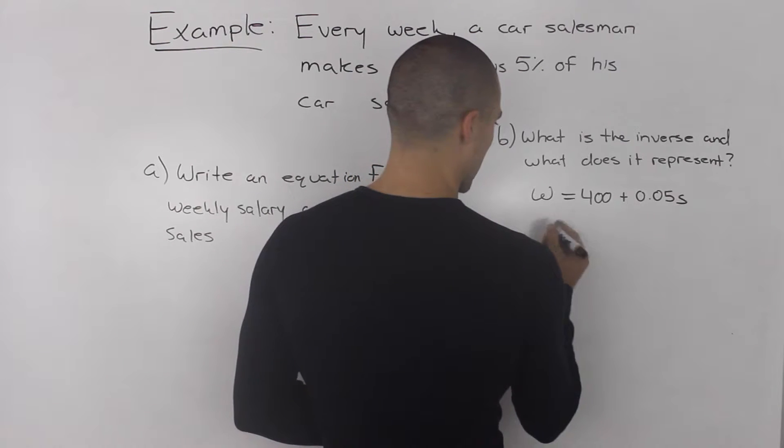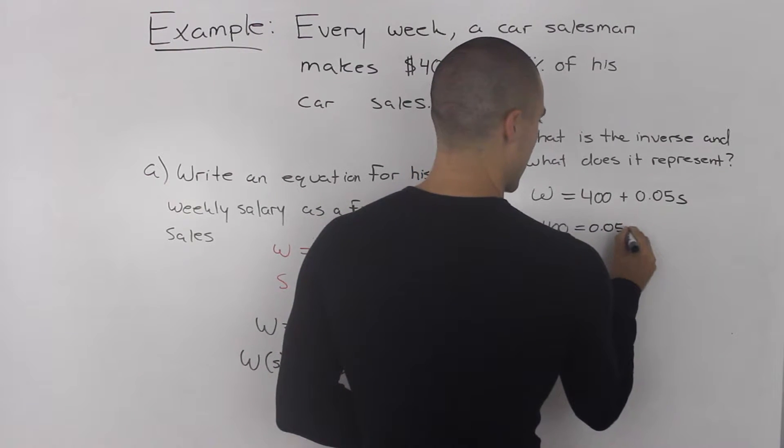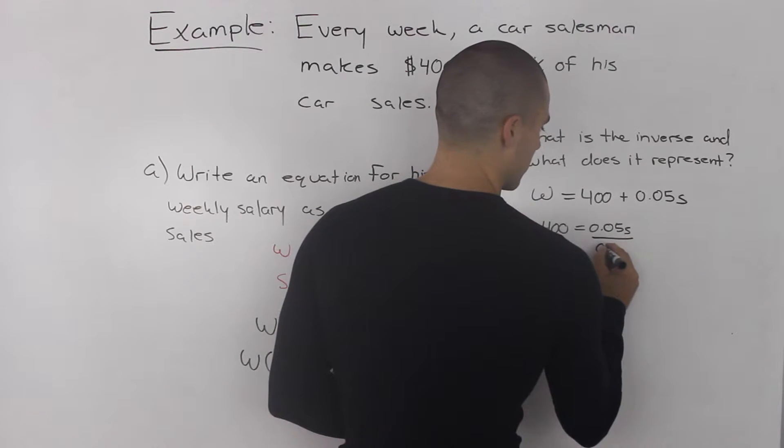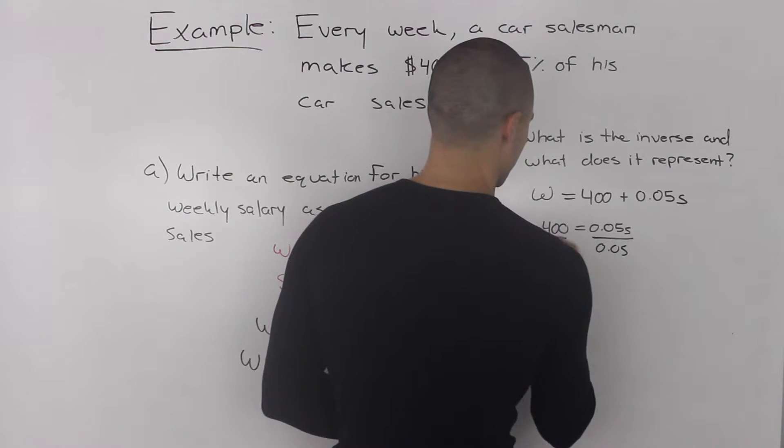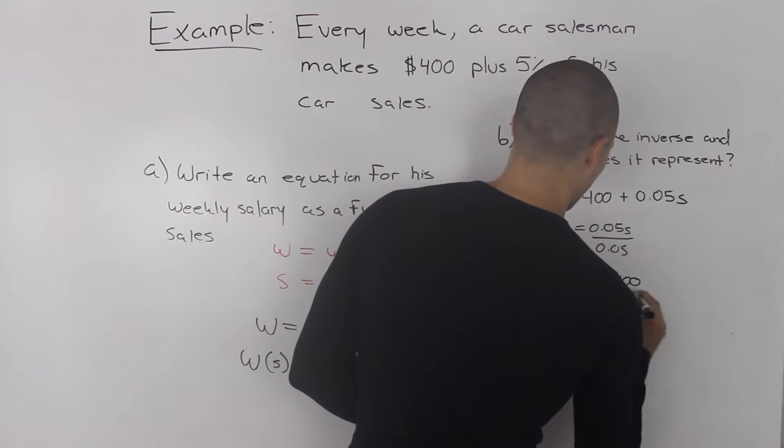Isolating for S, we'd bring the 400 over. W minus 400 is equal to 0.05 S. And then to isolate for S, we would divide both sides by 0.05. And we'd end up getting S is equal to W minus 400 over 0.05.